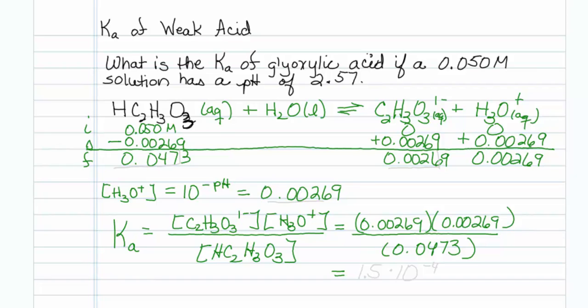I wind up with a value of 1.5 times 10 to the minus 4, which is pretty appropriate because I really only know my concentrations to 2 significant figures. So there you go, that's how to do that one.